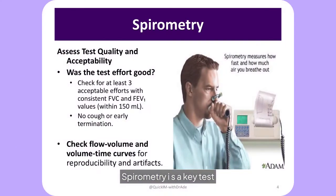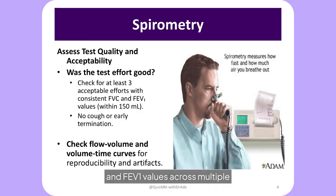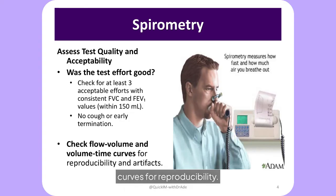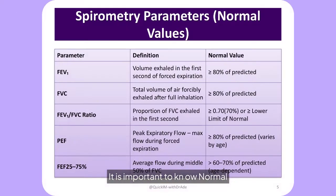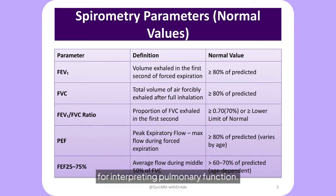Spirometry is a key test in assessing lung function. Ensuring test quality and acceptability is crucial — look for consistent FVC and FEV1 values across multiple efforts and check flow volume curves for reproducibility. This ensures reliable results for accurate diagnosis. It is important to know normal reference values for key spirometry parameters, FEV1, FVC, and the FEV1/FVC ratio, which are essential for interpreting pulmonary function.